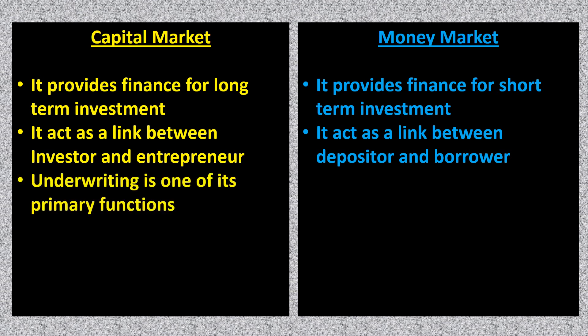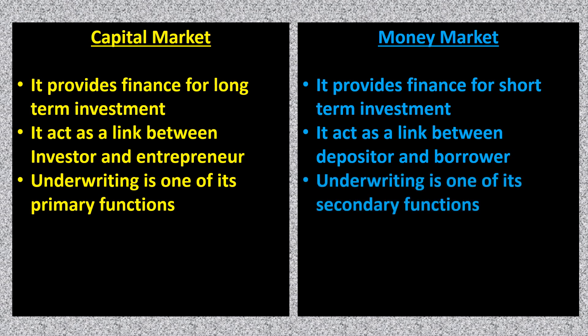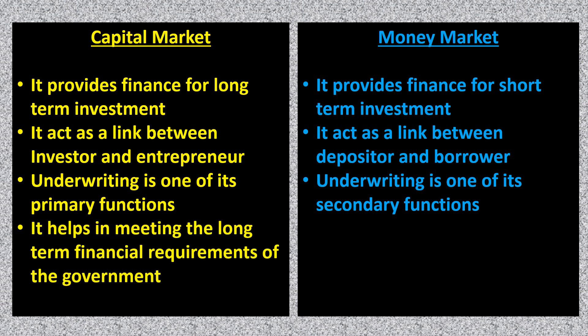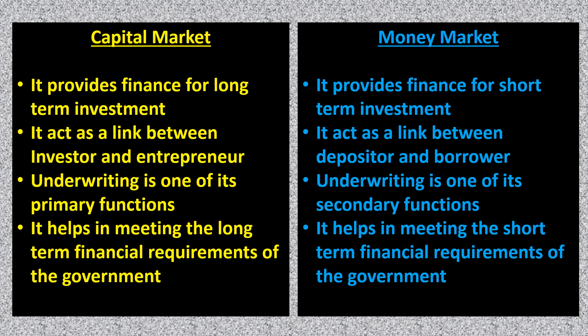The next point of difference is that underwriting is one of the main functions in the capital market, but in the case of the money market, it is only a secondary function. Also, the capital market supports the long-term financial requirements of the government, while the money market supports the short-term financial requirements of the government.